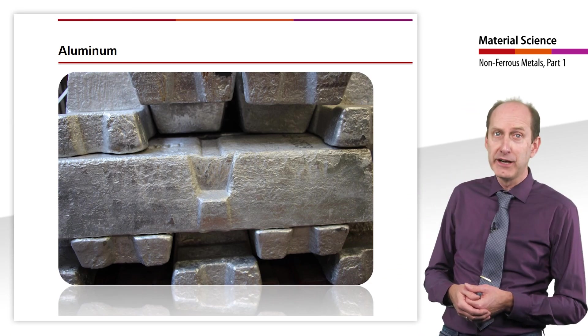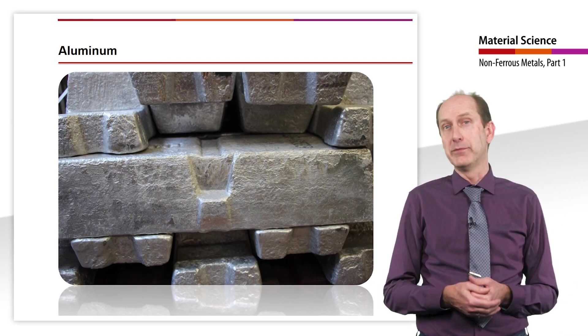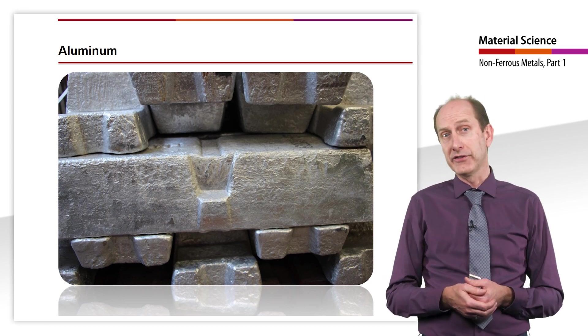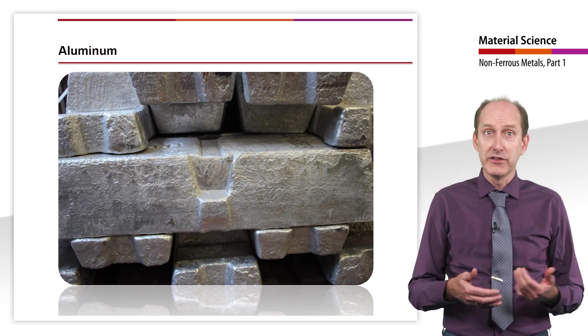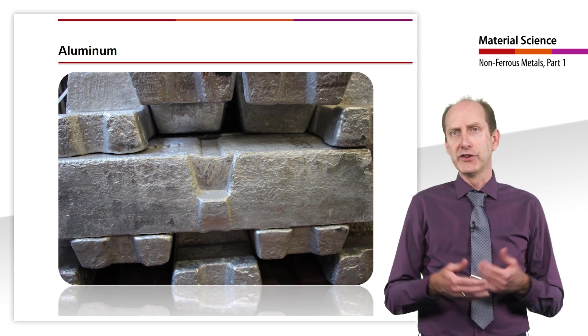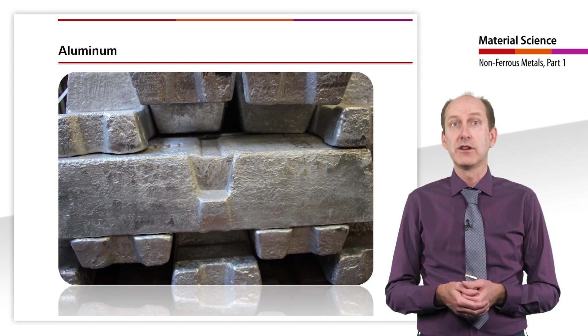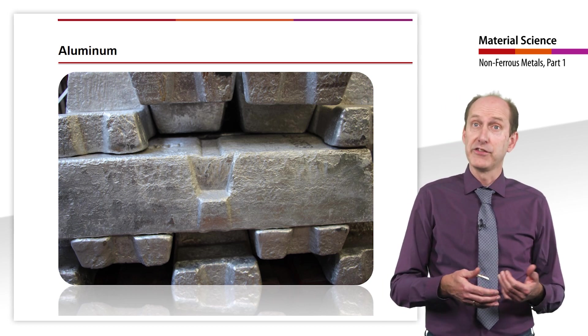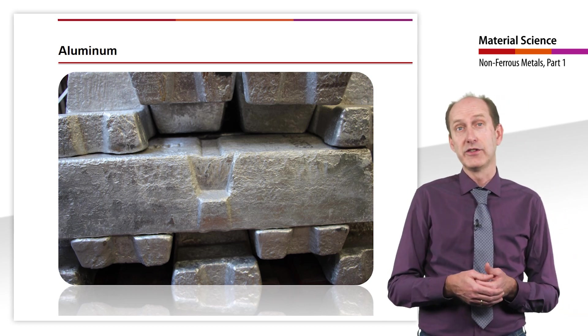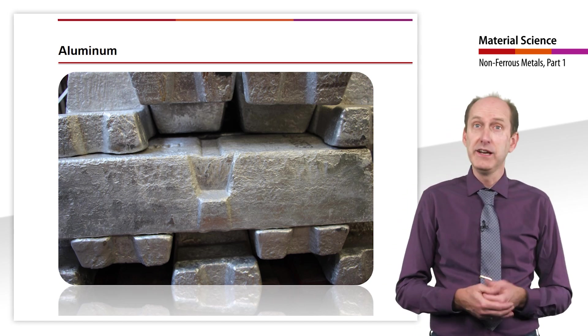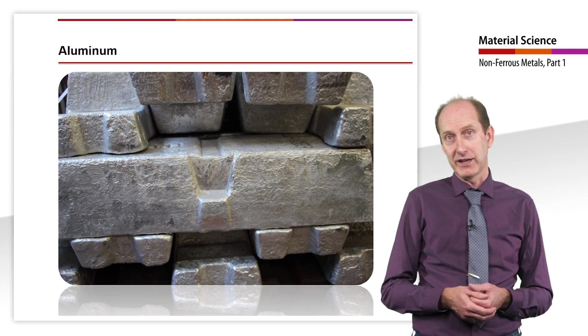According to its position in the galvanic series, aluminum is a base metal, but it is known to have good corrosion resistance. Similar to stainless steel, aluminum's corrosion resistance is also based on the formation of an oxide coating layer that covers the metal in air or aqueous solutions. If the top layer is damaged, self-healing takes place immediately by oxidation.